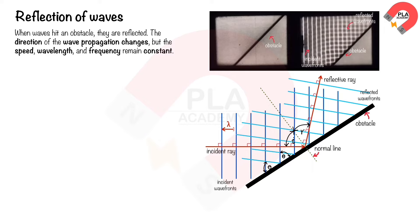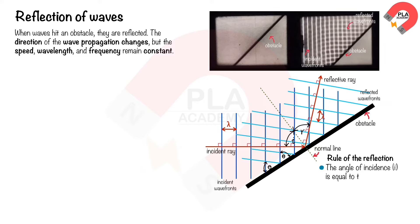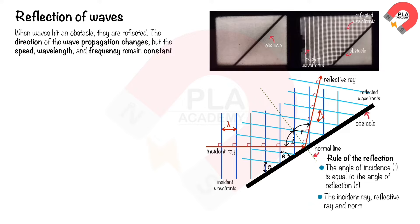The space between consecutive wavefronts is wavelength, which is equal before and after reflection. Rules of reflection: the angle of incidence, i, equals the angle of reflection, r. The incident ray, reflected ray, and normal ray all lie on the same plane.